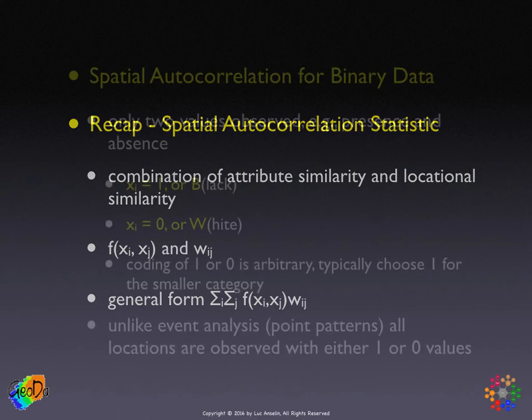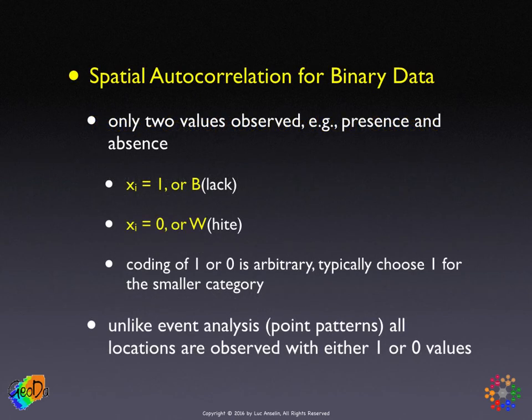The special case we're considering is for binary data — data that only take on a value of zero or one. For example, presence and absence of a particular phenomenon like a crime, as we'll see in the example. By convention, one of the two is coded one and the other is coded zero, but it doesn't really matter which one is one or zero.